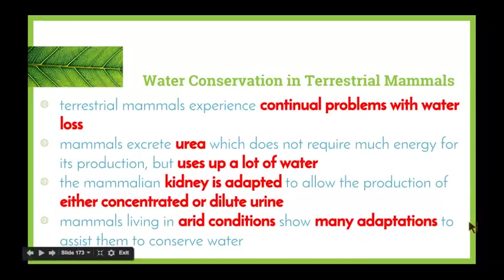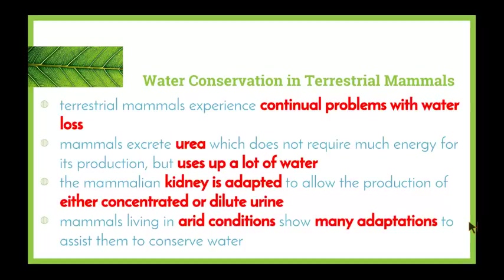Water conservation in terrestrial mammals: terrestrial mammals experience continual problems with water loss, as they don't always have a constant supply of water. Mammals excrete urea, which does not require much energy to produce but does require a lot of water. The mammalian kidney is adapted to allow production of either concentrated or dilute urine. Reabsorption of different substances takes place in order to create either concentrated or dilute urine based on feedback from the body about water levels. Mammals living in arid conditions show many adaptations to assist them to conserve water.